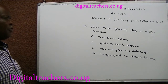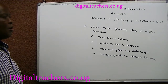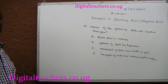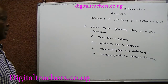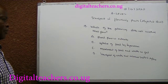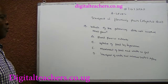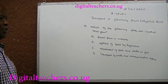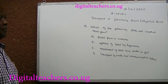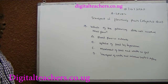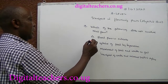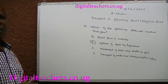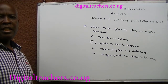Number 19. Which of the following does not involve mass flow? A. Blood flow in arteries. B. Uptake of food by tapeworm. C. Movement of food and water in the gut. D. Uptake of water and mineral salts in the xylem. You can pause and answer. The answer is B. Uptake of food by tapeworm is by diffusion.